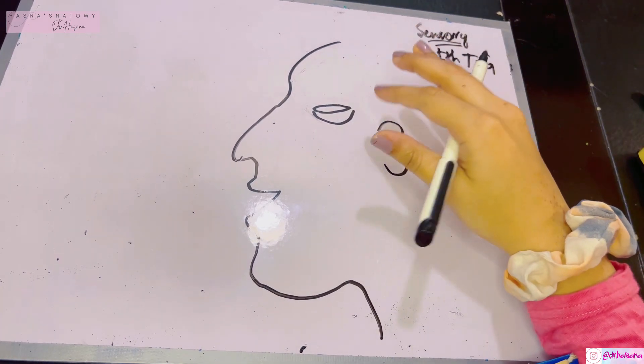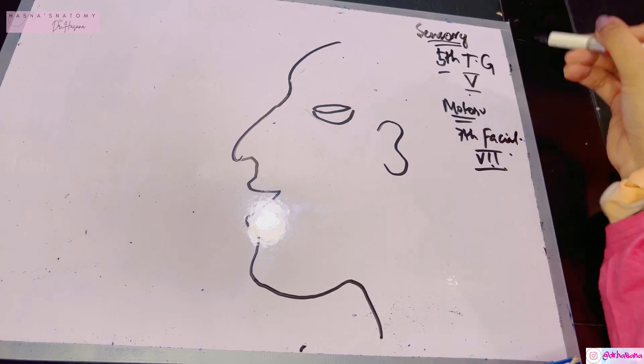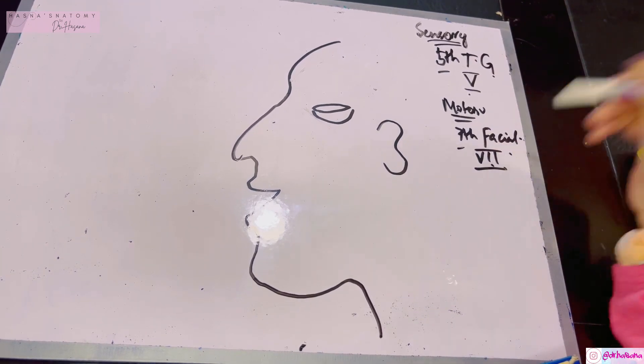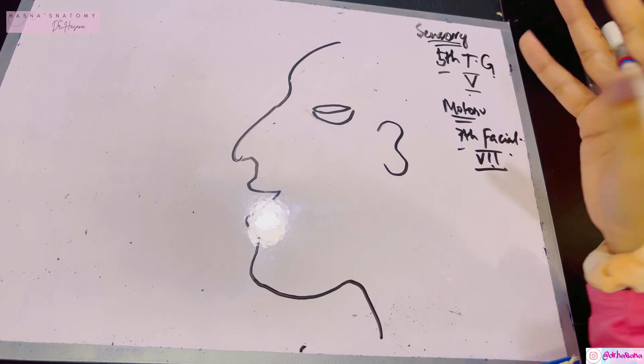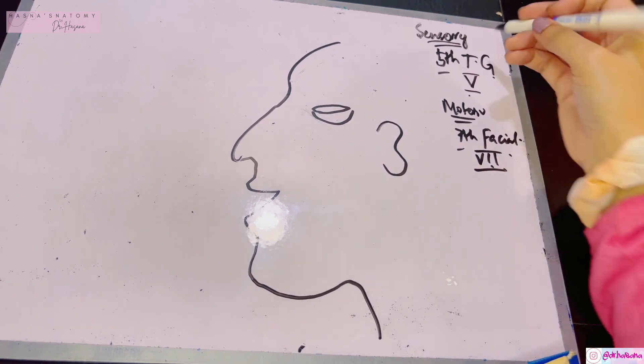The brain gives only 12 nerves. Among these 12 nerves, the fifth nerve is trigeminal and seventh is facial. You need to remember what these 12 nerves are, which you mostly study in neuroanatomy. Let's get started with the sensory supply.